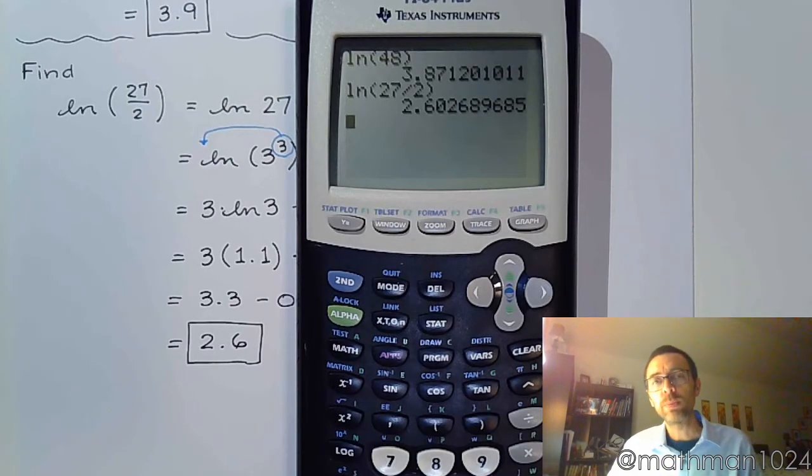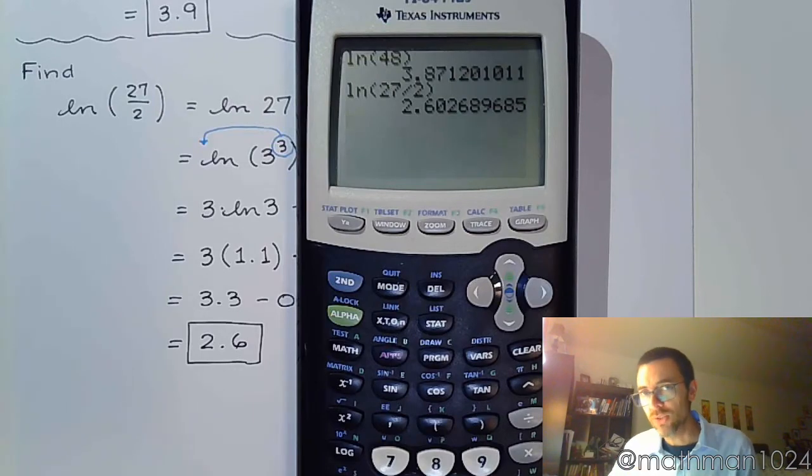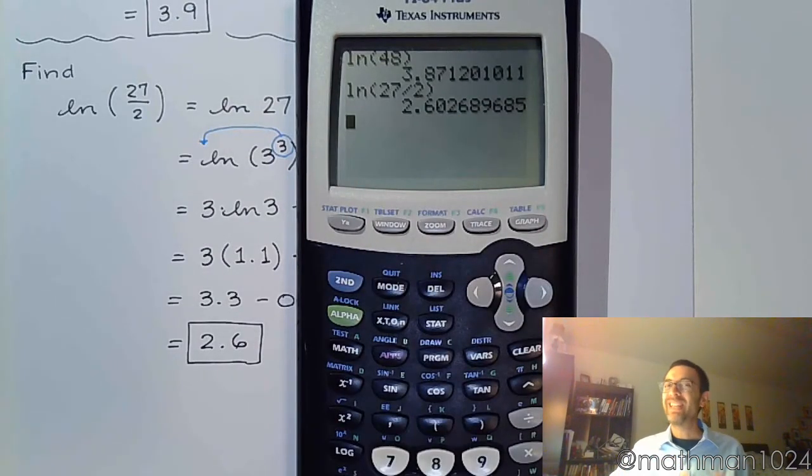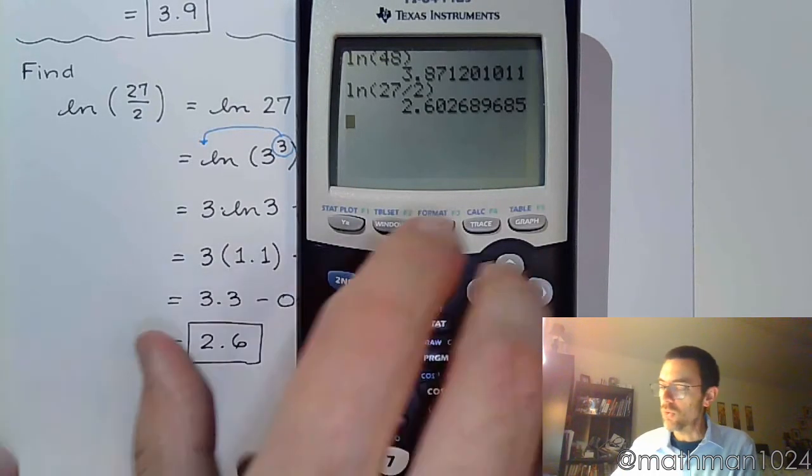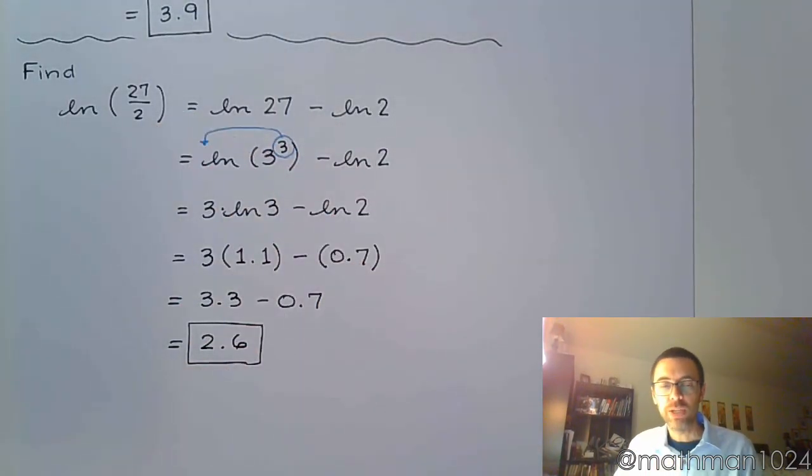Now when you do these examples in MyMathLab, a lot of times the approximations they give you go out to four decimal places, not just one. So if you think you're just going to throw it into the calculator and be okay, it's going to be off by just enough that when you type it into MyMathLab, it's going to tell you that you're wrong. So you really need to go through it just like we're doing here, step by step, piece by piece.